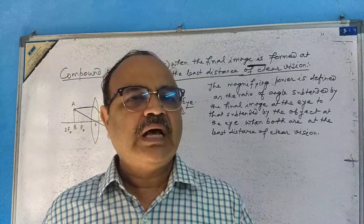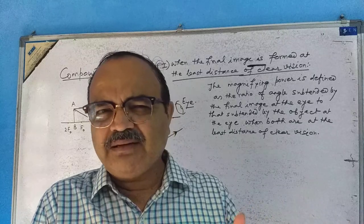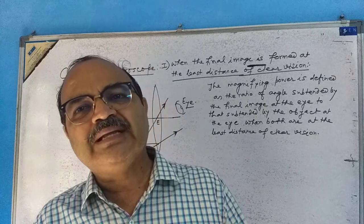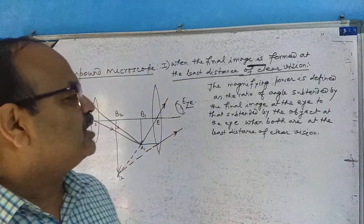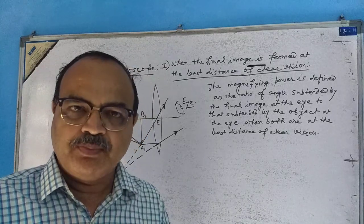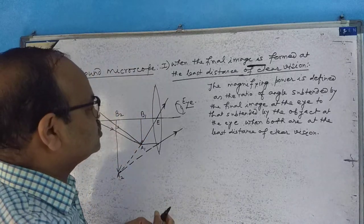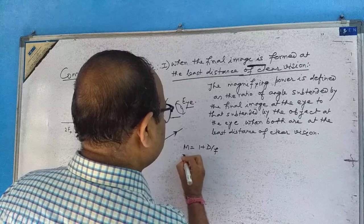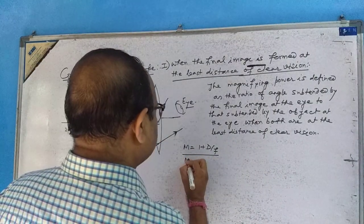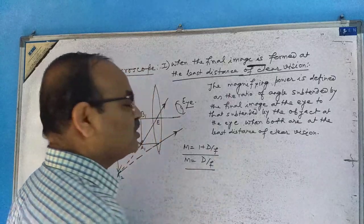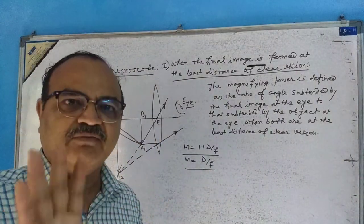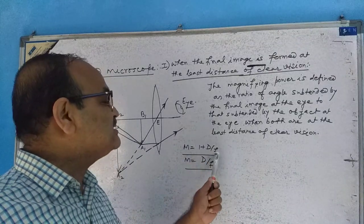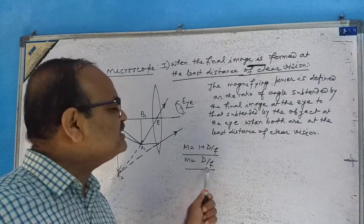Now today, let me go back slightly to our previous class. At last I told you that in order to increase the magnifying power of the simple microscope — here I just remind you, M is equal to 1 plus D by F for the clear vision, and M is equal to only D by F for the normal adjustment. These notes are already with you. I told you that in the right-hand side in both expressions, except F, all the things are constant.